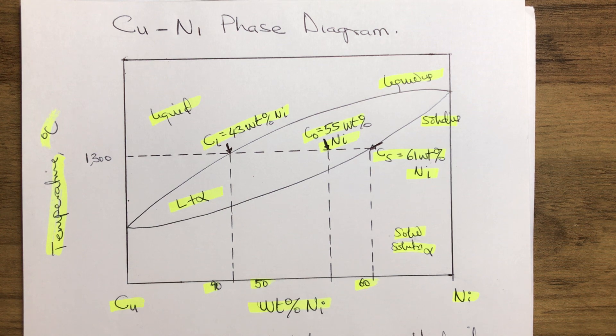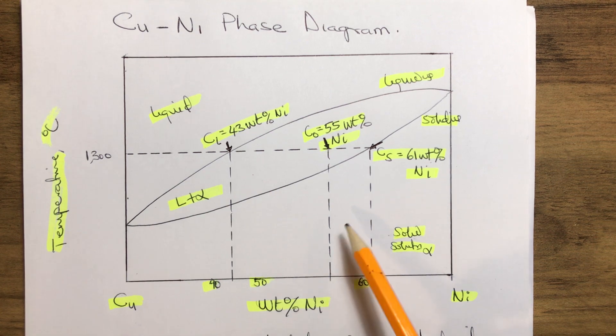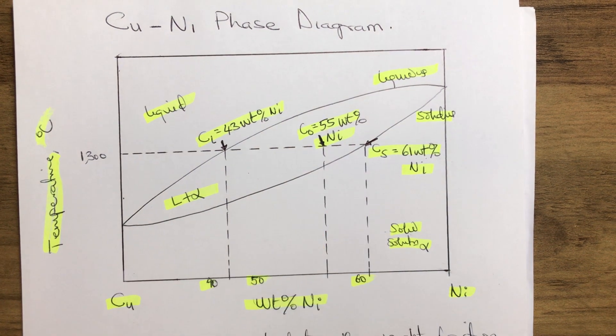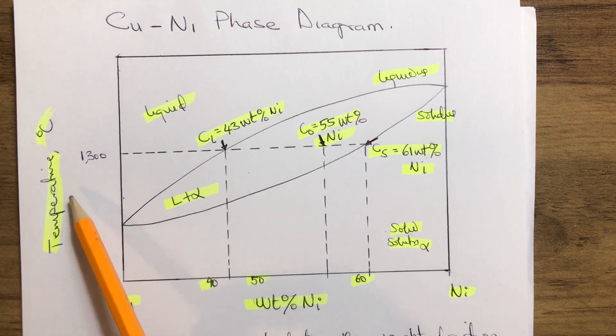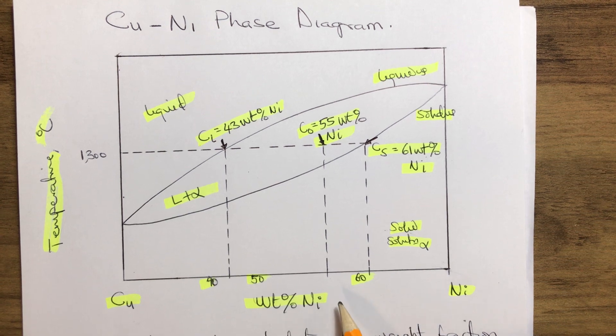We'll use the lever rule method to find the fractional weight of copper and nickel in the solid and liquid phase at a certain temperature. Now we have the copper-nickel phase diagram here. We have on the y-axis temperature, along the x-axis the weight of copper.